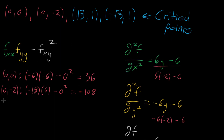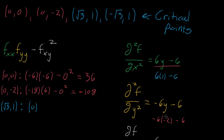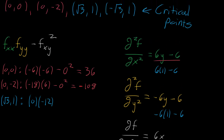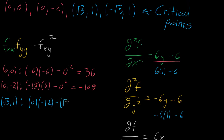At the point (√3, 1): plugging in y = 1 to f_xx gives six times one minus six, so the whole thing is just zero. For f_yy, plugging in y = 1 gives negative six times one minus six, so negative 12. For the mixed partial term, x = √3, so we subtract off (√3)² = 3. The result is zero times negative 12 minus 3, which is negative three.